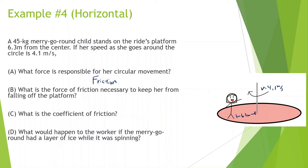What is the force of friction necessary to keep her from falling off the platform? The force of friction allows her to move in a circle, so force of friction equals the centripetal force: Ff = mv²/r. That's m = 45 kg, v = 4.1 m/s squared, r = 6.3 m. This gives us 120.1 newtons.